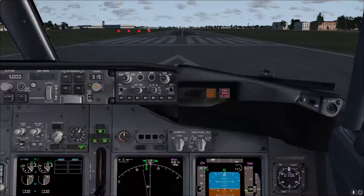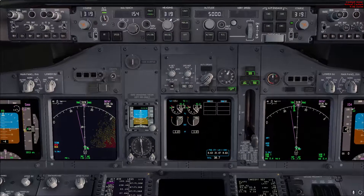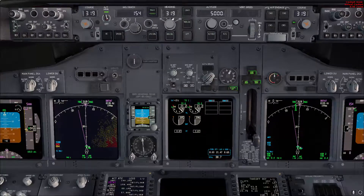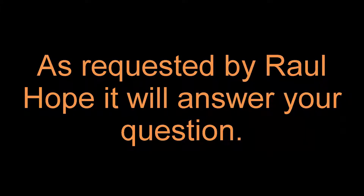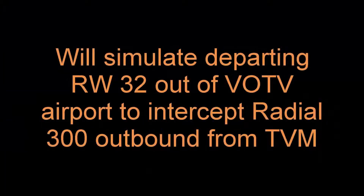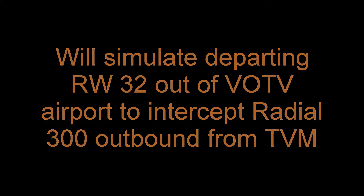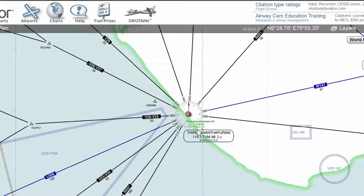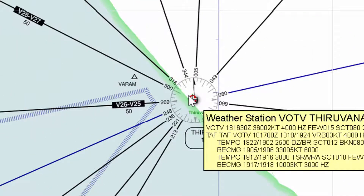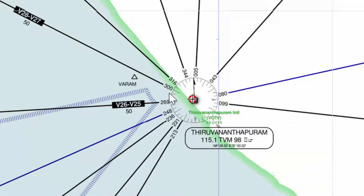Hello, this is Abdelmati Asiri. Welcome to another Boeing 737 video tutorial. In this video I will cover how to intercept a VOR radial either outbound or inbound using the FMC. I will use the Victor Oscar Tango Victor airport, runway 32 departure with runway heading 319, and after departure intercept radial 300 outbound from Tango Victor Mike.